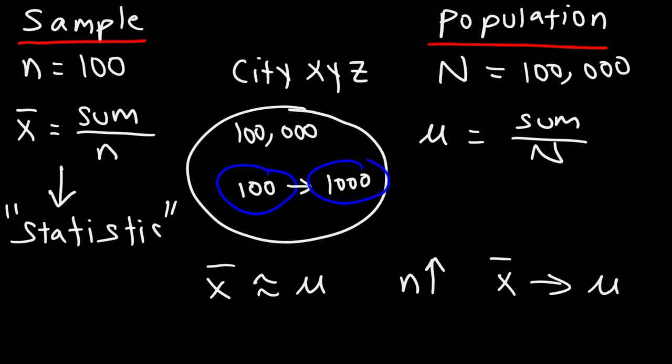Now, the population mean is not considered a statistic. But there's a different term that applies to it. The population mean is referred to as a parameter. Now, you might not be used to hearing that one, but that's what it's referred to. It's a type of parameter.